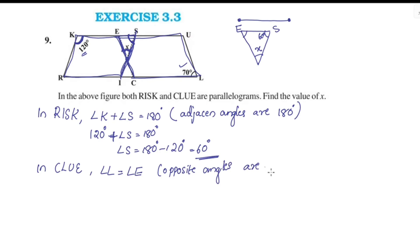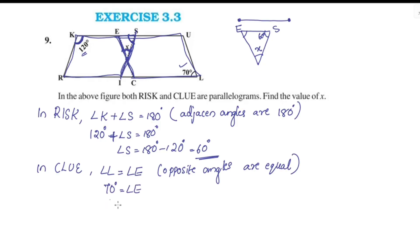The reason is that opposite angles of a parallelogram are equal. So Angle L equals Angle E. Angle L is 70 degrees, therefore Angle E is also equal to 70 degrees.